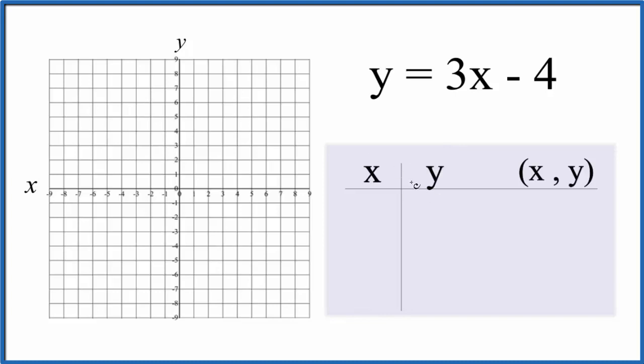So we can start out by putting values in for x. It's always good to start out with 0. So if we had a 0, 3 times 0, that's 0. 0 minus 4, that's minus 4.